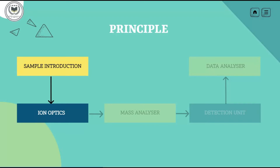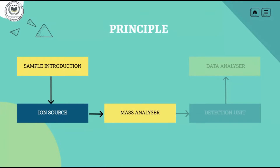Then comes the mass analyzer. After transiting through the ion optic system, ions arrive at the mass analyzer. Several different types of mass analyzers have been used for ICP-MS. These include quadrupole, magnetic sector, and, rarely, time-of-flight. By far the most common type used for routine clinical biochemistry applications is the quadrupole mass analyzer.